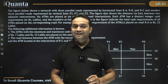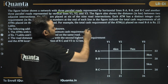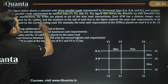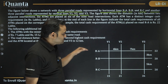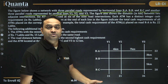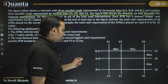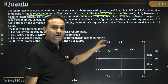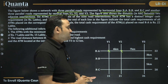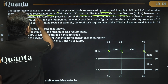CAT 2024 LRDI section slot 3. The figure shows a network with three parallel roads represented by horizontal lines RA, RB, and RC, and another three parallel roads represented by vertical lines V1, V2, and V3. The figure also shows the distance in kilometers between adjacent intersections — for example, RA∩V1 to RA∩V2 is 4 km, and RA∩V2 to RA∩V3 is 7 km.